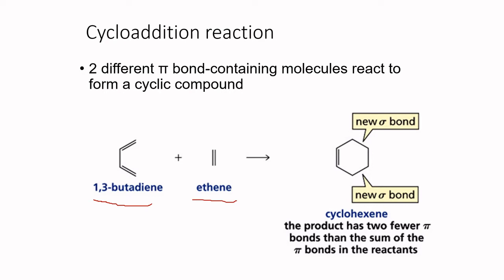When we look at the product formed, we know that when a molecule undergoes a cycloaddition reaction, the product will have two fewer pi bonds than the sum of the pi bonds in the reactants. If we look at the starting materials, we have three pi bonds, so in the product there will be only one pi bond and the formation of two new sigma bonds.